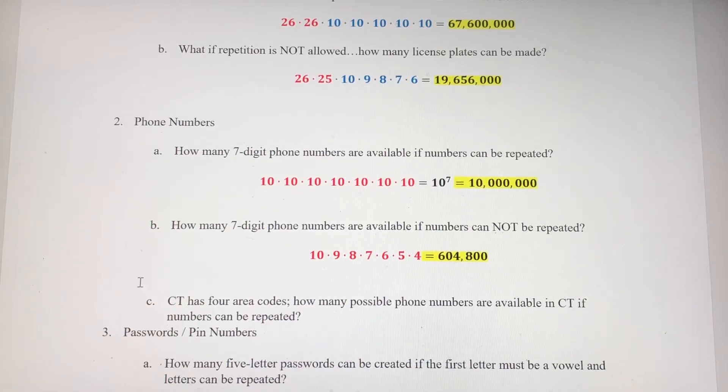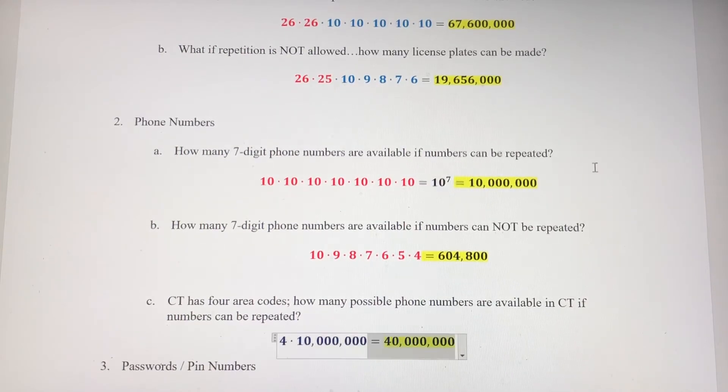Now, in part C here, Connecticut has four area codes. How many possible phone numbers are available in Connecticut if numbers can be repeated? So if numbers can be repeated, we're back up here to part A, but each seven digit number could be used four times. As soon as you change the area code, the phone number is changed. So we're going to have four times 10 million, so there's 40 million possible phone numbers in Connecticut.